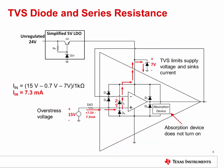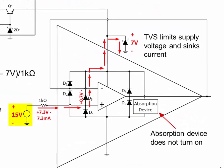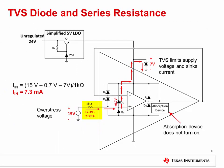Here we show the same circuit and EOS event from before, but now a TVS diode on the power supply and a series resistance at the input have been added to protect the amplifier from EOS damage. The 15 volt EOS voltage is applied to the input, and the ESD diode D3 directs the overvoltage pulse to the TVS diode. The TVS diode limits the supply voltage to 7 volts, which is below the voltage needed to turn on the absorption device. The series 1 kilohm resistor limits the current to less than 10 milliamps to prevent damage — 10 milliamps is the absolute maximum rating for signal input current. This method of EOS protection is the most common way to protect semiconductor devices.